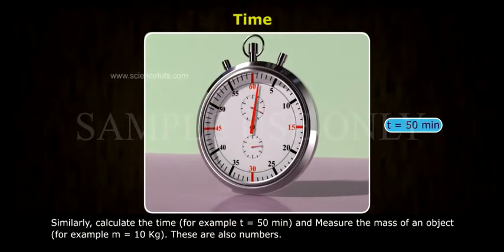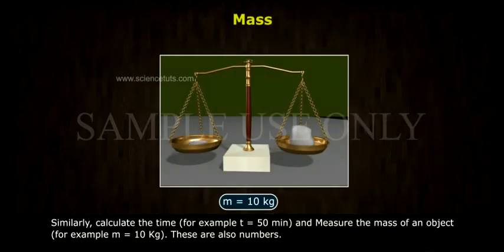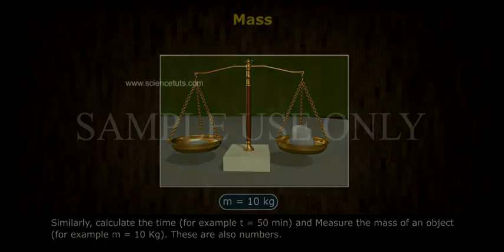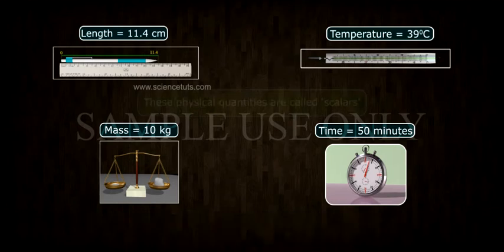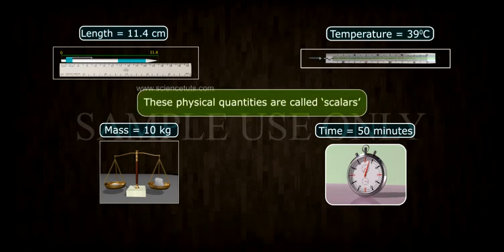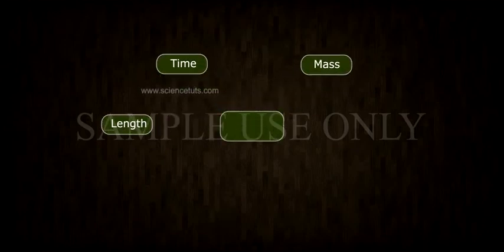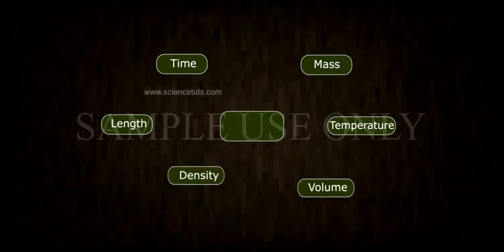Similarly, calculate the time. For example, T is equal to 50 minutes. And measure the mass of an object. For example, M is equal to 10 kg. These are also numbers. These physical quantities, described completely by a number with proper units. These physical quantities are called scalars. Length, time, mass, temperature, volume, density are some examples of scalars.